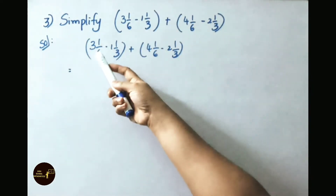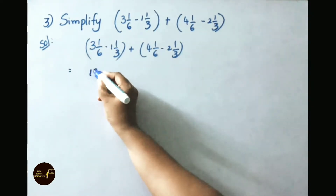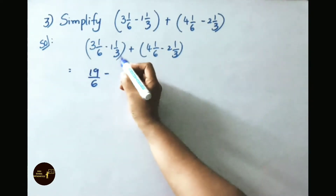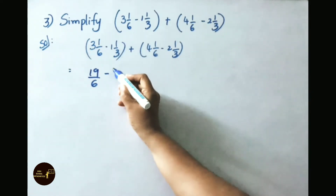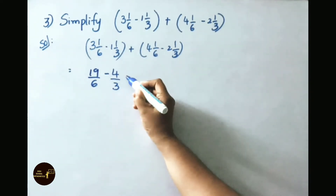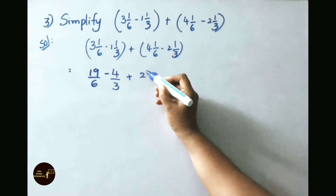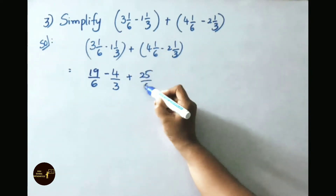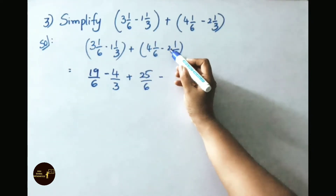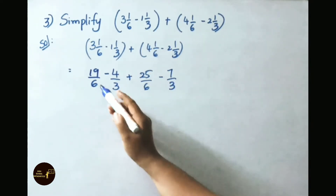6 times 3 is 18, plus 1 is 19. Write down 19 by 6. Minus: 3 times 1 is 3, plus 1 is 4. Write down 4 by 3. Plus: 6 times 4 is 24, plus 1 is 25 by 6. Minus: 3 times 2 is 6, plus 1 is 7. Write down 7 by 3.